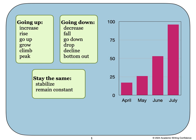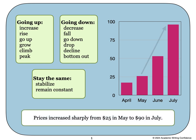To describe this bar chart, we could write a sentence like this. Prices increased sharply from $25 in May to $90 in July. Let's look at a few more example sentences.